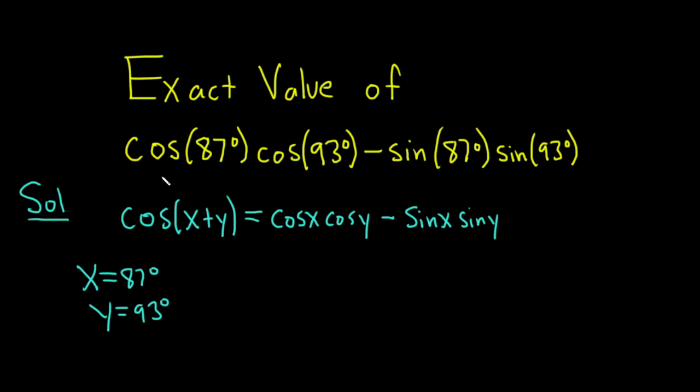Basically all of this is going to equal cosine of x plus y. You see how it's cosine x cosine y minus sine x sine y—it matches perfectly. So x plus y which is 87 plus 93 degrees.